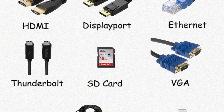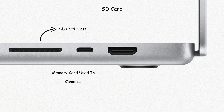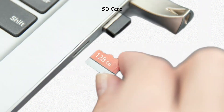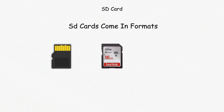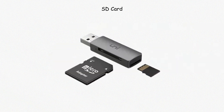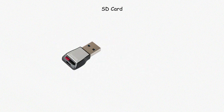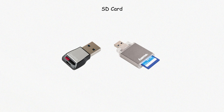SD card slots allow direct access to memory cards used in cameras, phones, and other devices. Full-sized SD card slots accept standard secure digital cards, while some laptops use micro SD slots for smaller cards. These ports are used to read or write data, often photos or video files. SD cards come in formats like SD, SDHC, and SDXC, with speeds and capacities varying accordingly. A UHS-I slot supports up to 104 megabytes per second, while UHS-II and UHS-III support faster transfer rates, mainly for professional use.